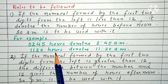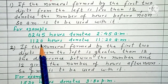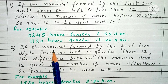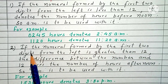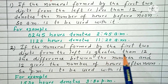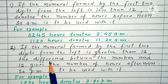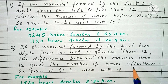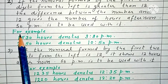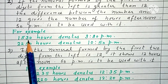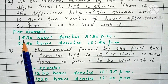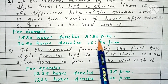1120 hours denotes 11:20 AM. Rule 2: if the numeral formed by the first two digits from the left is greater than 12, the difference between the number and 12 gives the number of hours afternoon, so PM is to be used with it. For example, 1530 hours: 15 minus 12 is 3, so it is 3:30 PM.